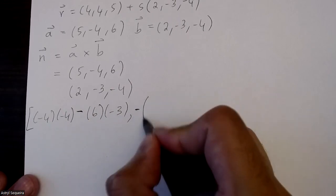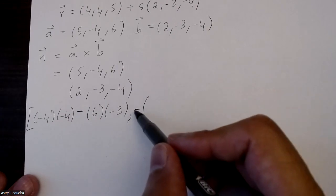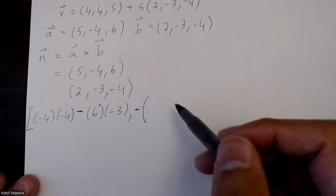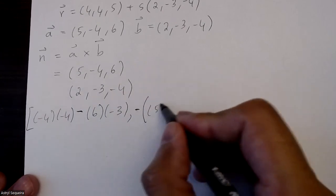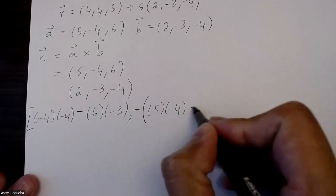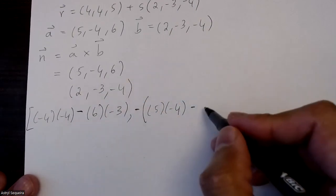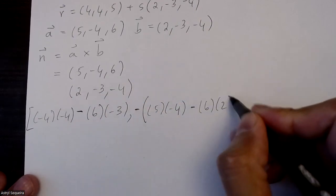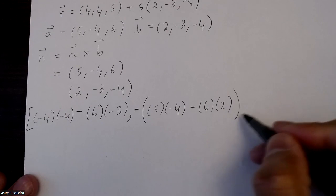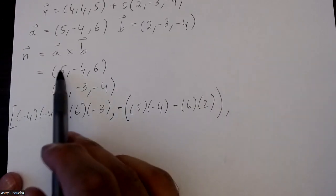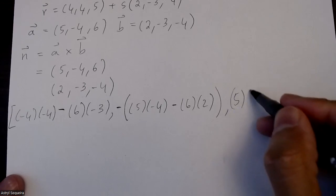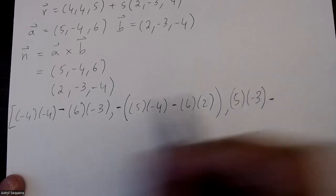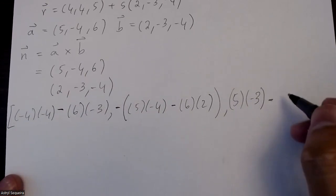My y component is always negative. Well, there's always a negative in front of it, it's not always negative. And I have 5 times negative 4 minus 6 times 2. And then my z component is just 5 times negative 3 minus negative 4 times 2.